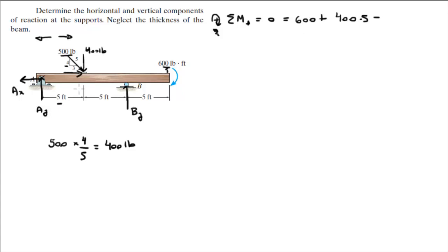minus the moment created by the By is minus because it's creating a counterclockwise moment of By times the distance from A to B, which is 10 feet.